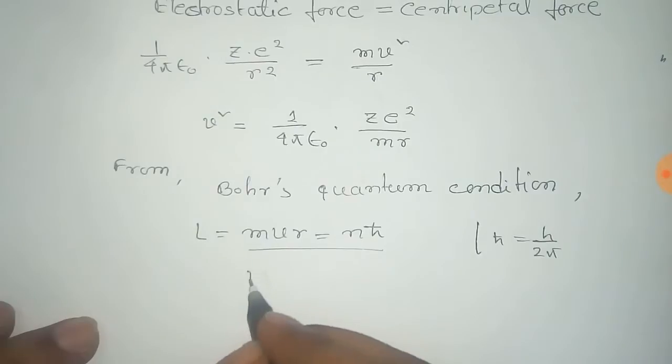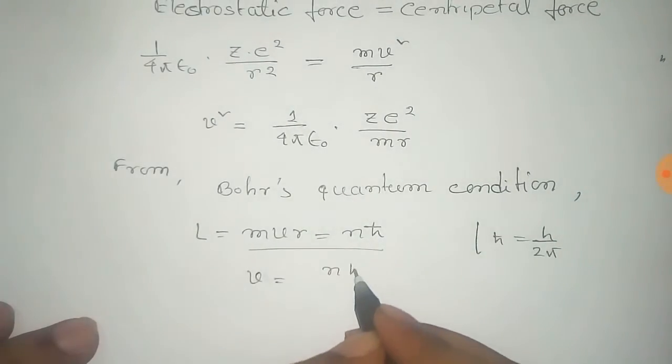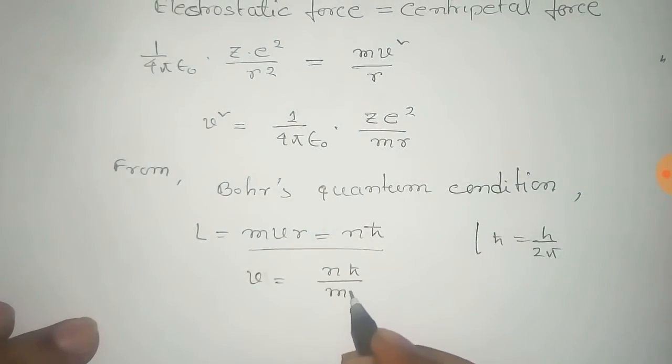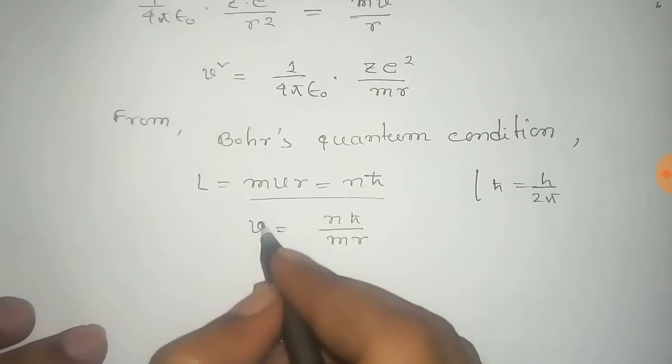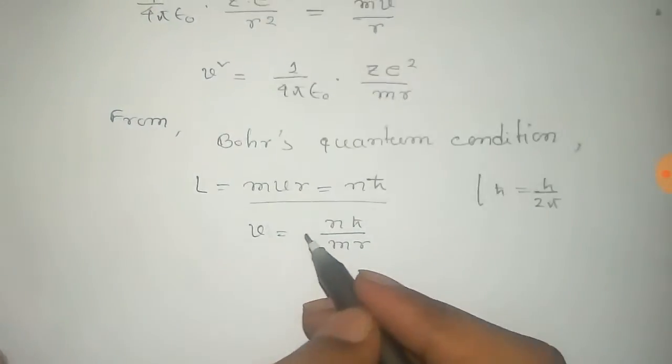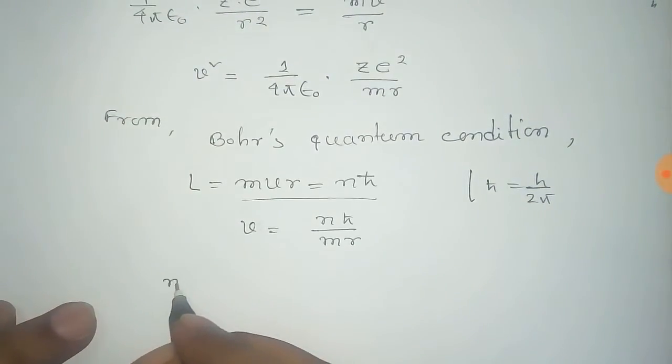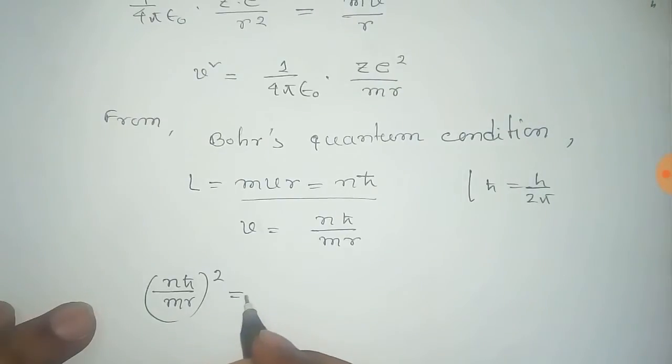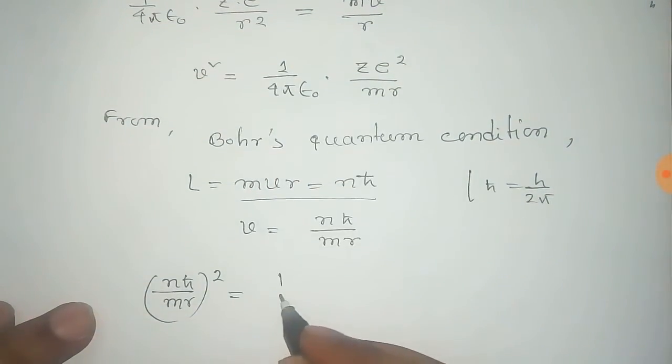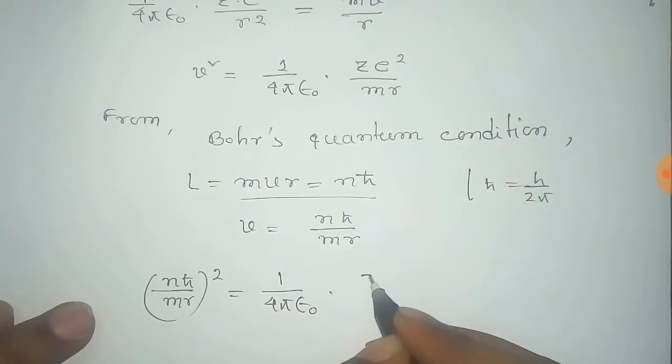From that we get the value of V as Nℏ/(MR). Now if you put the value of V in this equation, then we get (Nℏ/MR)² equals 1/(4πε₀) times ZE²/(MR).